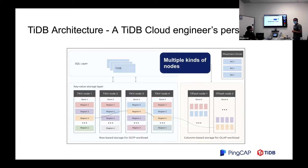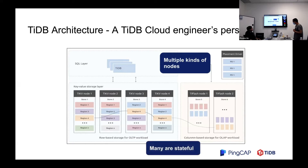The data will also be replicated to the column-based storage for OLAP, which is called TiFlash. We also have a placement driver to balance the data shards. There are multiple kinds of nodes — TiKV, TiDB, PD, TiFlash, backup workers, TiCDC, and more. Many of them are stateful. For example, TiKV stores real data, so you cannot just kill a TiKV and replace it with a new node — it's not that easy.